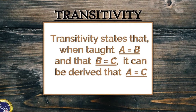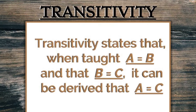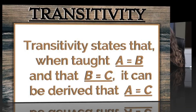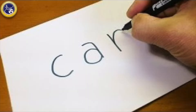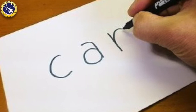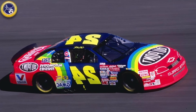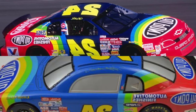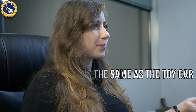The third and final stimulus equivalence is transitivity. Transitivity states that when taught A equals B and B equals C, it can be derived that A equals C. That one's a little more complex to spot in the natural environment, but when you know what to look for it can become very straightforward. If you teach a student that the word 'car' is equivalent to a picture of a car, and teach that same student that the picture of a car is the same as the toy car, it can be derived that the auditory word 'car' is the same as the toy car.